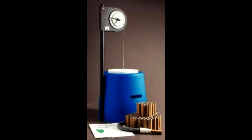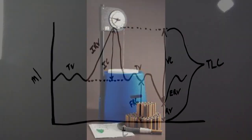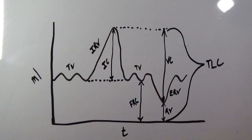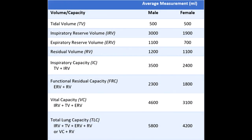A healthcare professional will use a machine called a spirometer to measure lung volumes. These volumes indicate how well the thoracic cage, respiratory muscles, and lungs are working together to move air in and out. The resulting measurements of lung volume and capacity can be used to see how well the respiratory system is working, and they can also be used to help diagnose respiratory diseases.